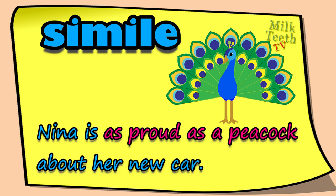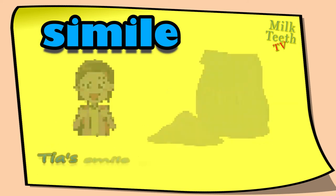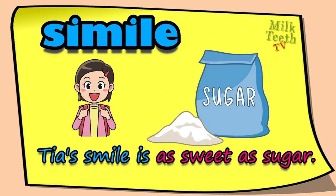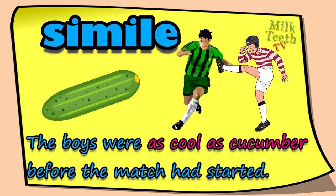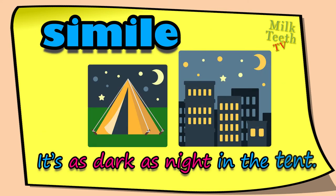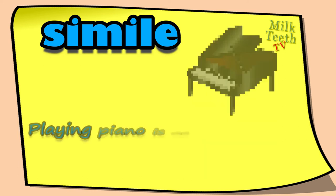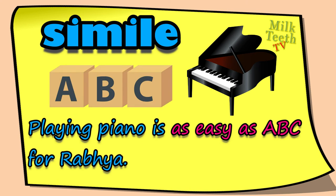'Her actions seemed as ugly as a toad' — simile: as ugly as a toad. 'Nina is as proud as a peacock about her new car' — simile: as proud as a peacock. 'Tia's smile is as sweet as sugar' — simile: as sweet as sugar. 'The boys were as cool as a cucumber before the match' — simile: as cool as a cucumber.